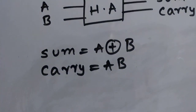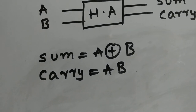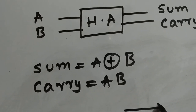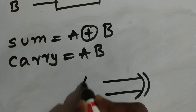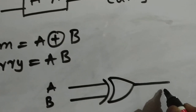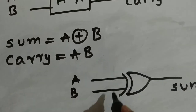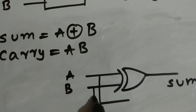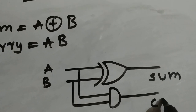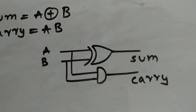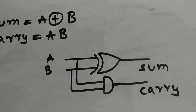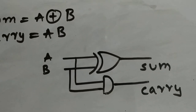Now let's design the circuit for a half adder. These are the two Boolean expressions we got from the truth table. Sum equals A XOR B — so A and B go through an XOR gate to give us sum. When the same inputs go through an AND gate we get carry. So a half adder requires two gates: one XOR gate for sum and one AND gate for carry.